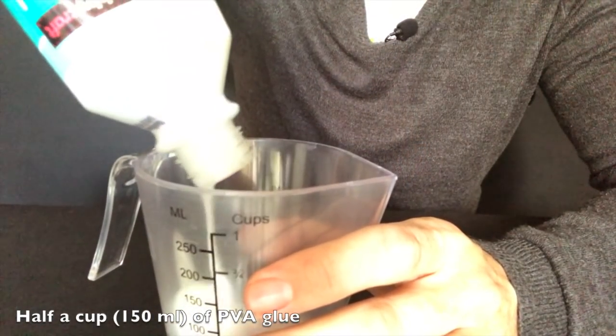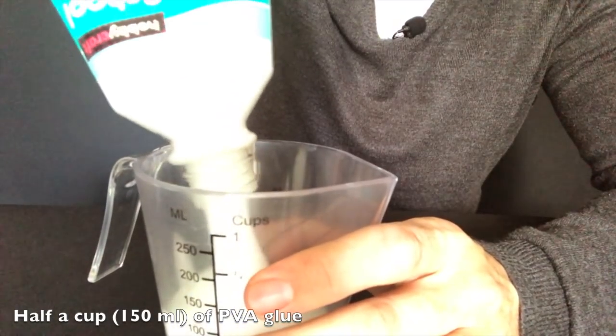You might want to cover the table though, because it could get a little bit messy. First you need half a cup of PVA glue, and that's about 150 ml.